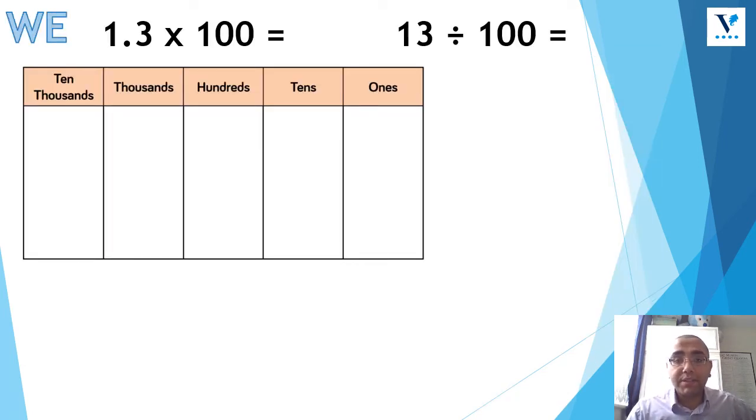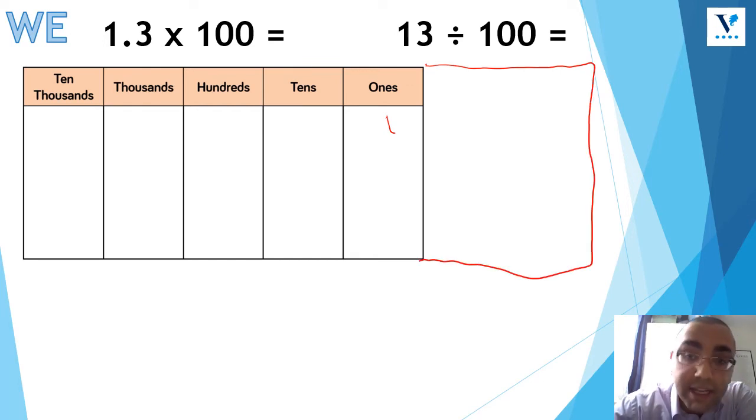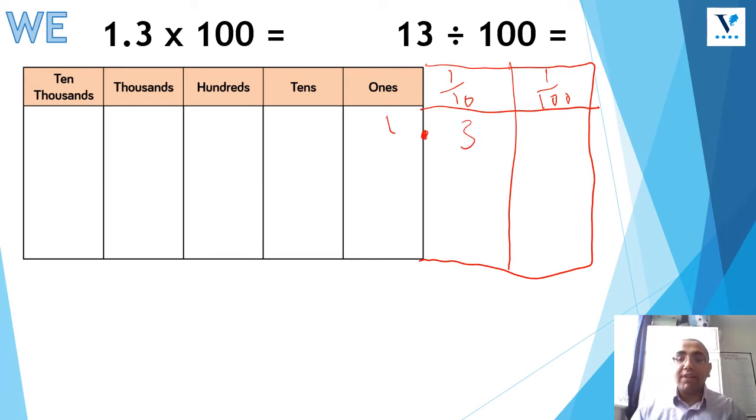So let's now have a go at this question together. 1.3 times 100, and 13 divided by 100. So 1.3 times 100. What's my first step? What do I need to do with that 1.3? Tell me, nice and loud, shout it out. Good, I need to write it onto my place value grid. Well, I can see here that I've got a 1, but then I don't have my 0.3, my 10th. So I need to now add that into my place value grid.